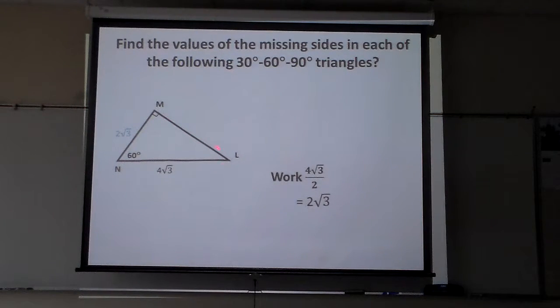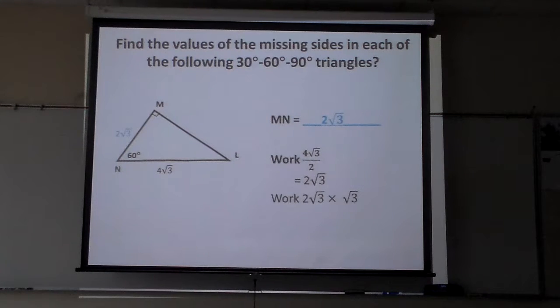How can I find this side? If I have the small one, the 30 side, and I want to find the middle one, I have to multiply it by square root of 3. So I'm going to take 2 square roots of 3 times square root of 3, which makes the square root of 9. And what's the square root of 9? 3. And what is 2 times 3? 6. So this answer here is 6.